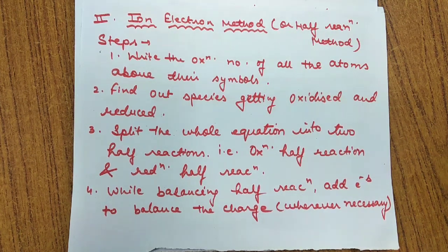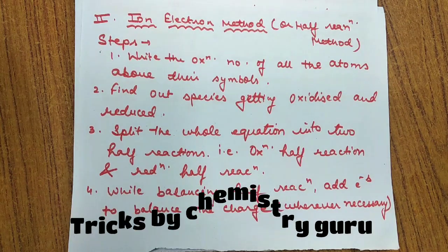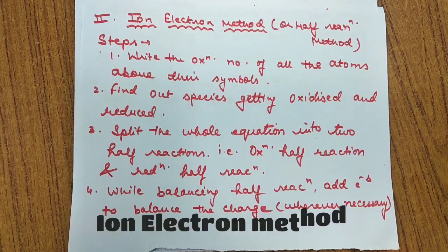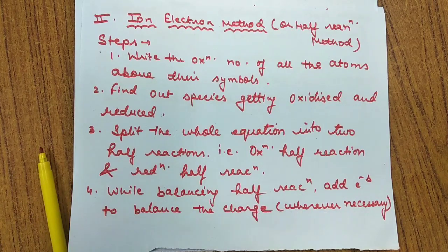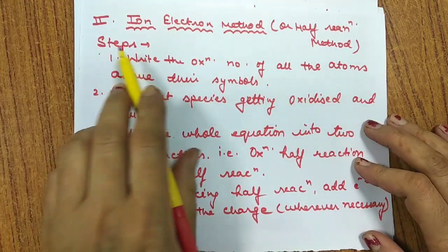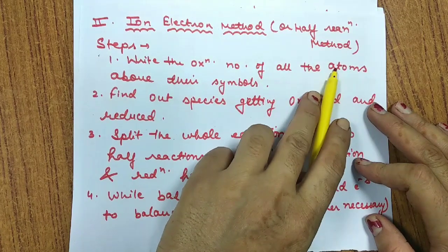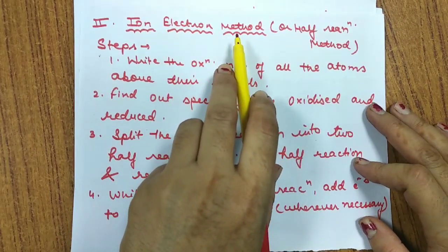Hello dear students, my name is Dr. Vishalikai and the name of this channel is Tricks by Chemistry Guru. Today, in continuation with Class 11th Redox Reactions, we'll discuss the method of balancing known as the ion electron method, also called the half reaction method.